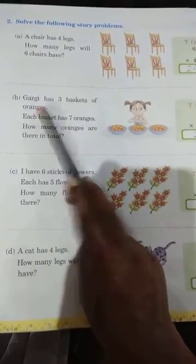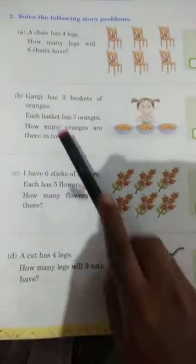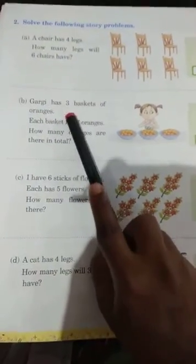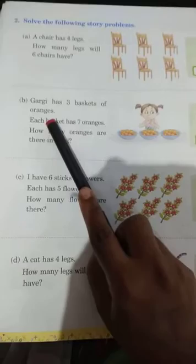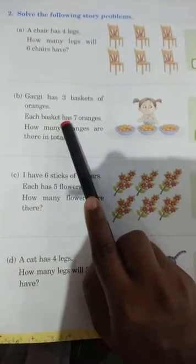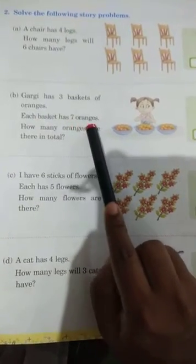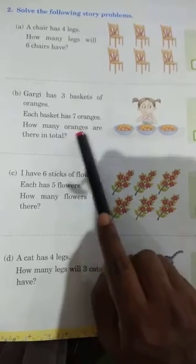Number B. Gagi has three baskets of oranges. Each basket has seven oranges. How many oranges are there in total?